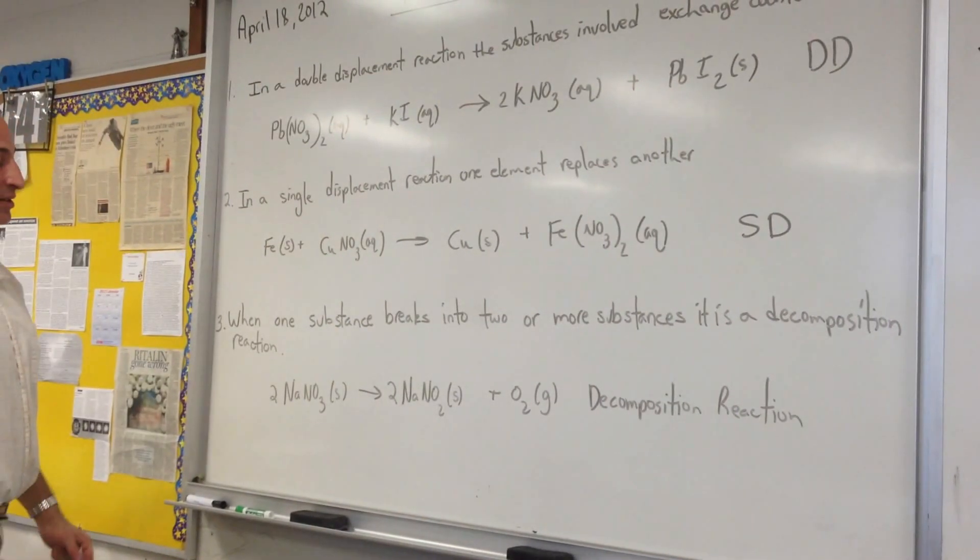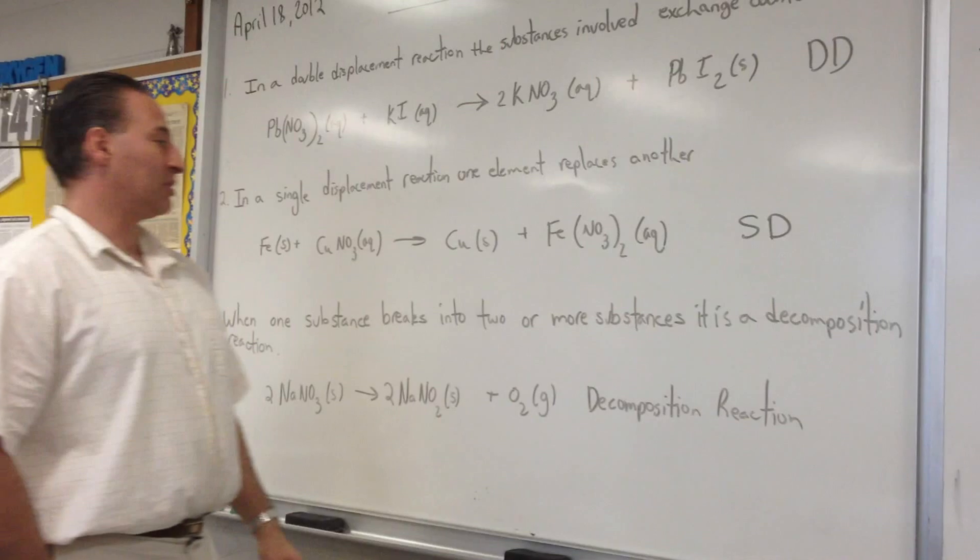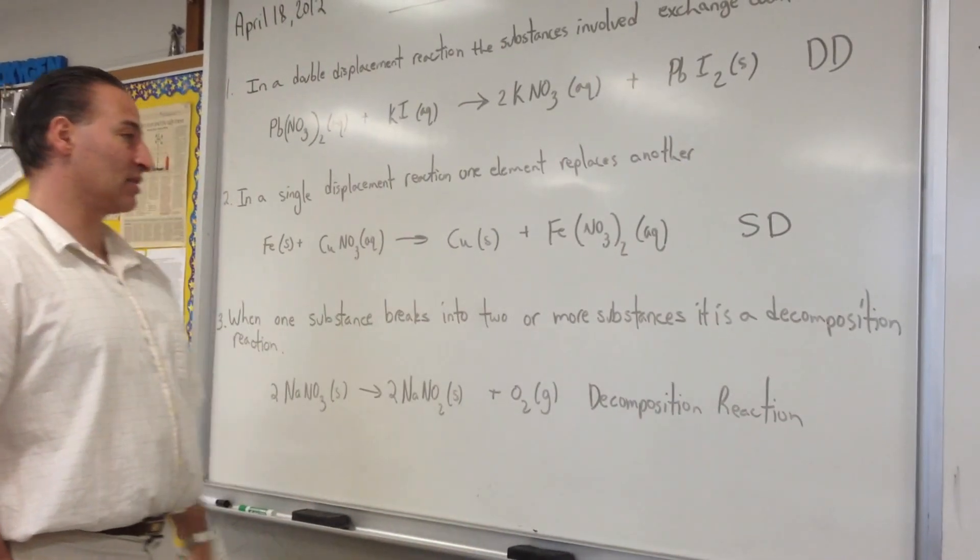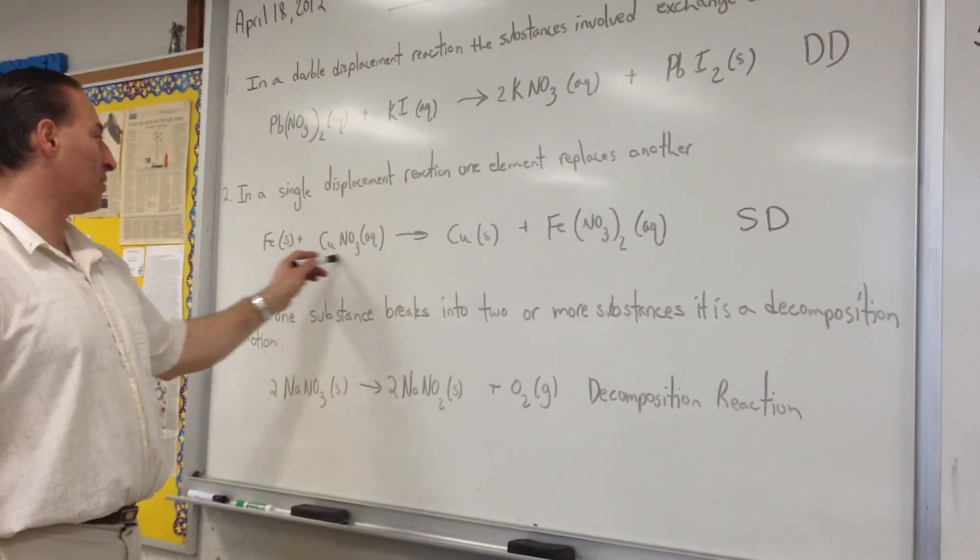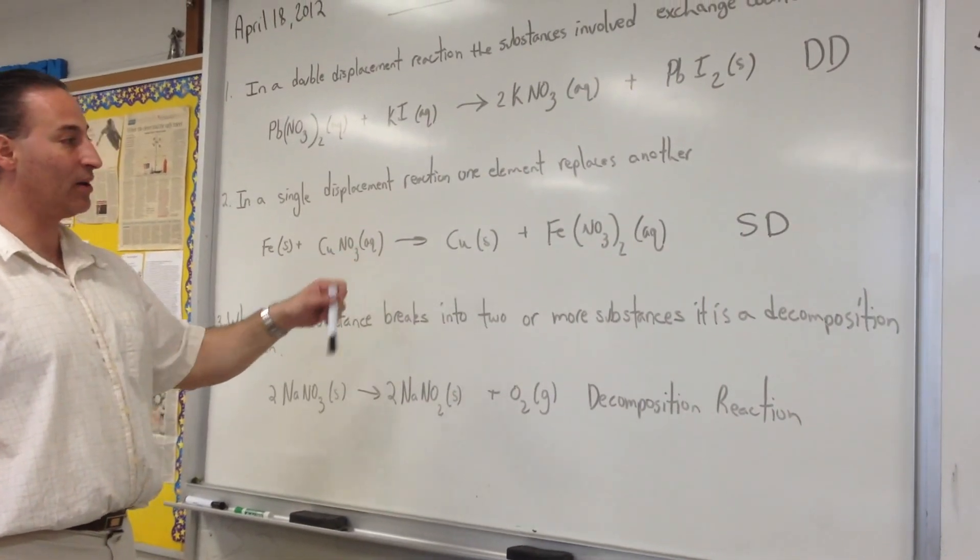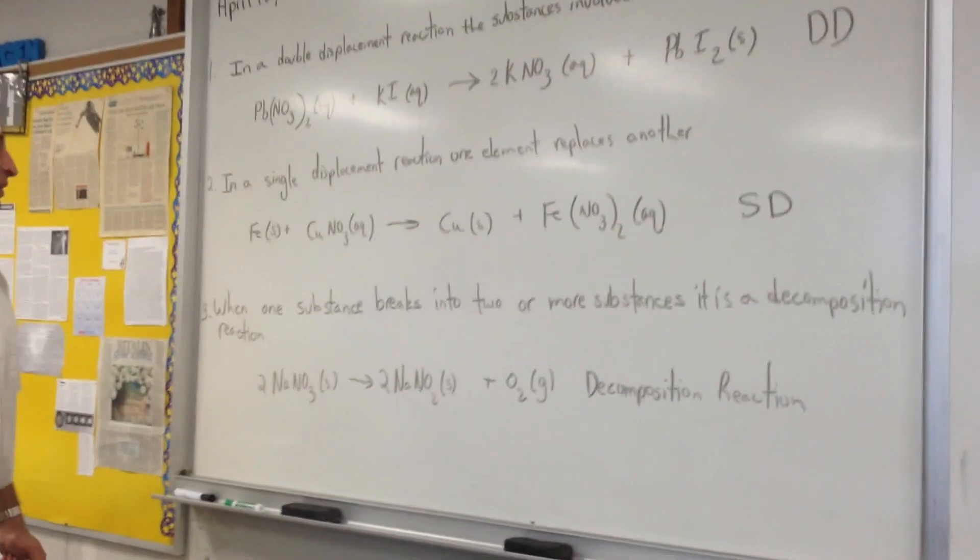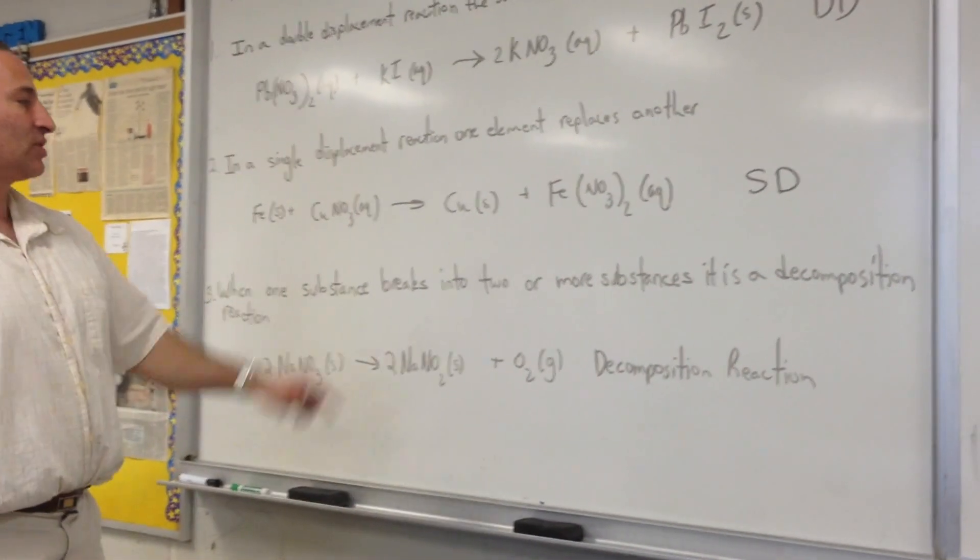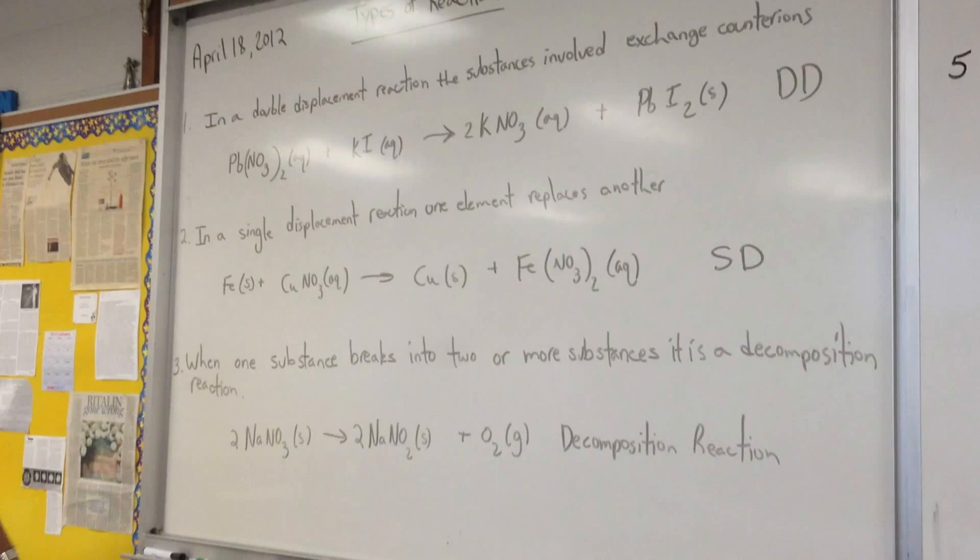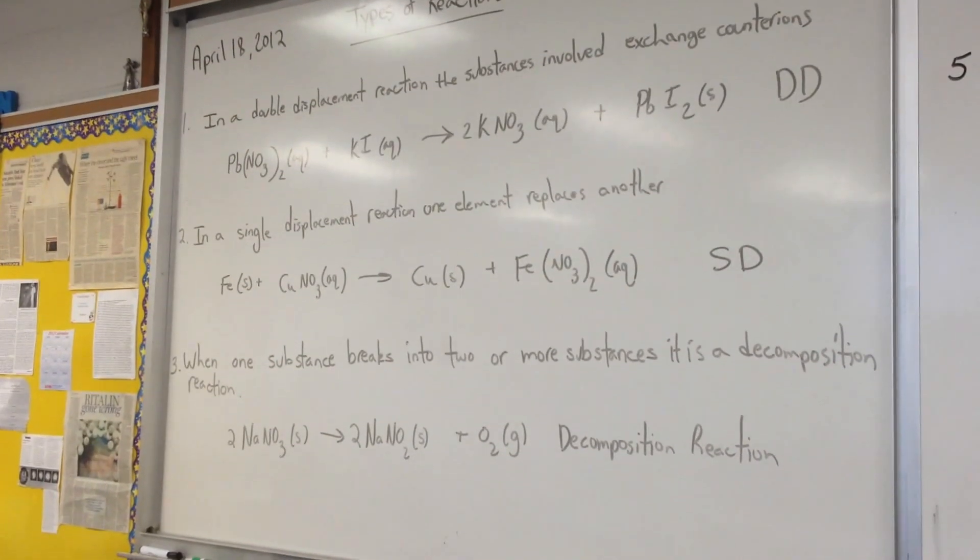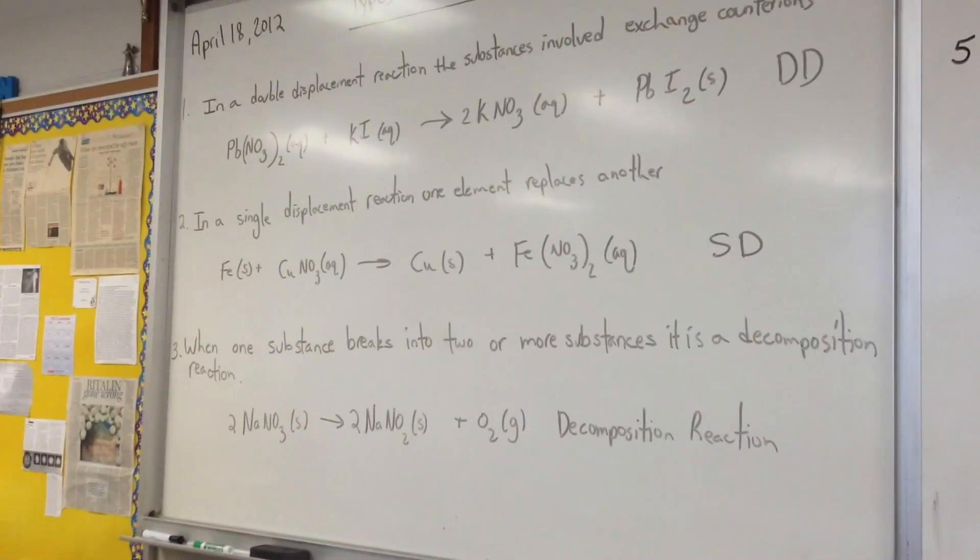Whereas copper takes away the electrons from iron and becomes precipitated, and you get copper precipitating onto either inside the beaker or onto the iron surface. You can demonstrate this experiment by taking an iron nail and stirring it into a solution of copper sulfate or copper nitrate, and you'll see that the nail will become coated with copper. That's a single displacement reaction.